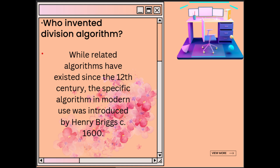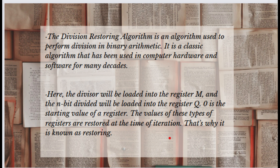Division Restoring Algorithm was first proposed in 1952 by Henry Briggs and is also referred to as Briggs-Raushra's Algorithm. It was developed as a way to perform division using a hardware implementation, which was necessary in the earlier days of computing when software implementations of division were not yet efficient. Sir Henry was a British mathematician well known for his contribution to the development of the Division Restoring Algorithm.